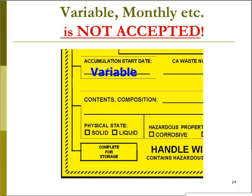If I accumulate small amounts of waste and empty the container sometimes on Fridays and sometimes every other week or every other day, is it okay to write 'variable' for the accumulation start date? The answer is no. If you cannot empty the container either daily or weekly, you must insert a date for the accumulation start date.